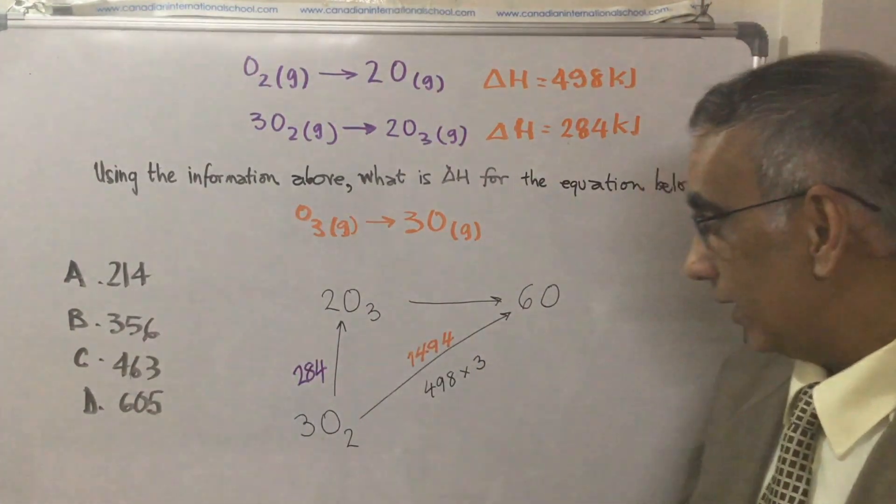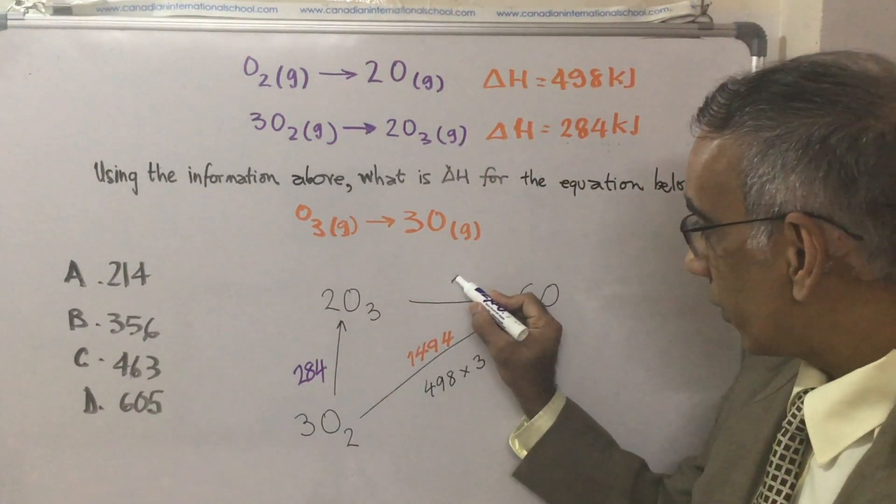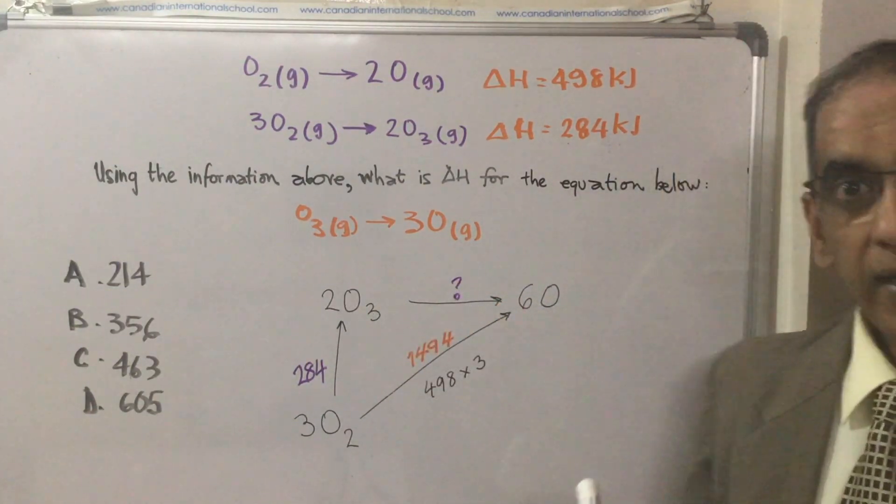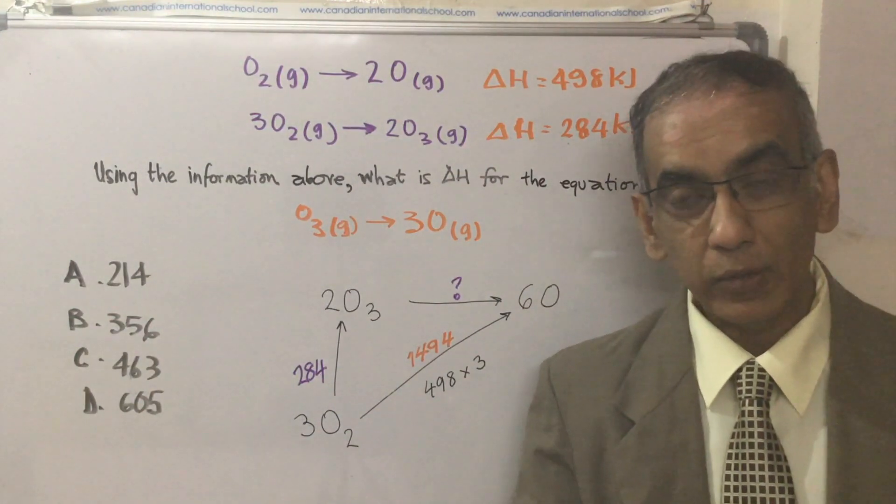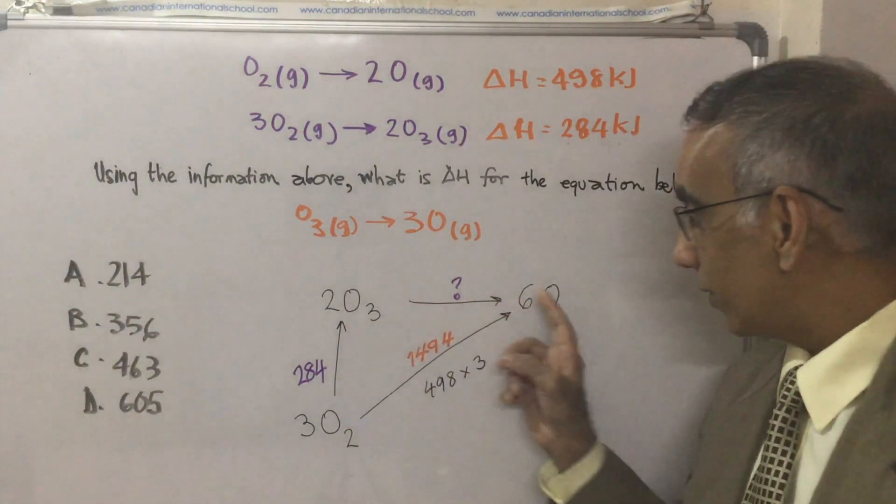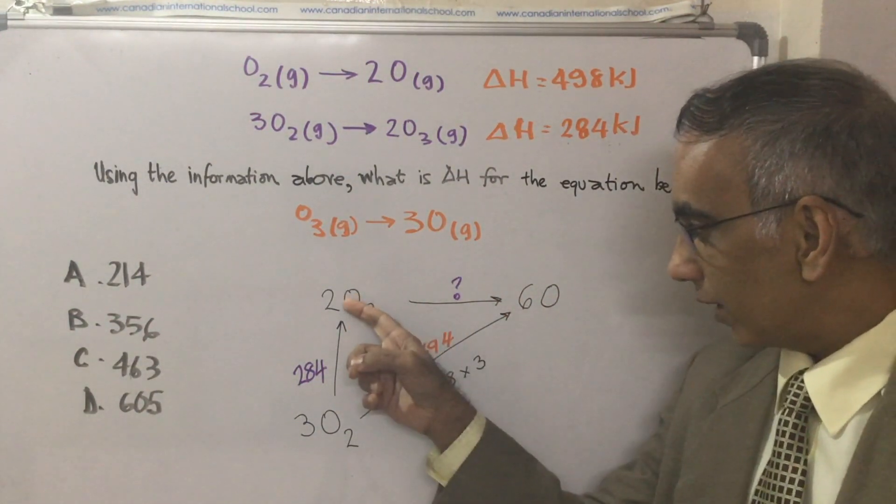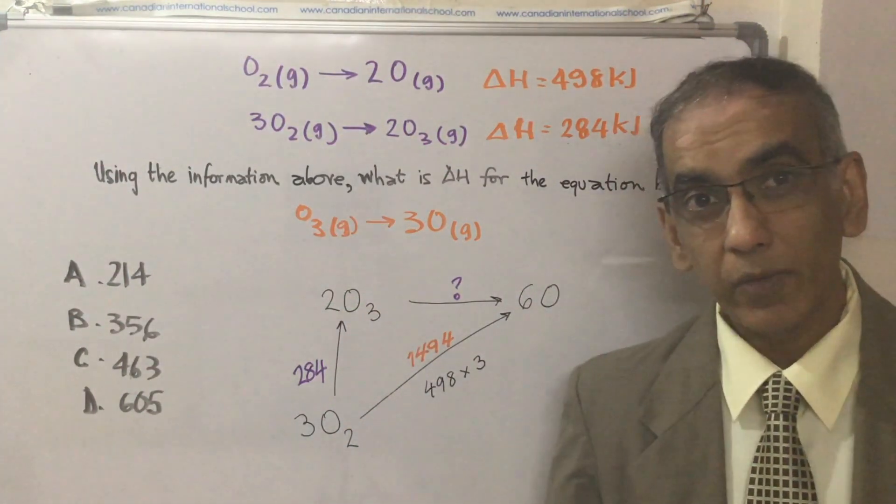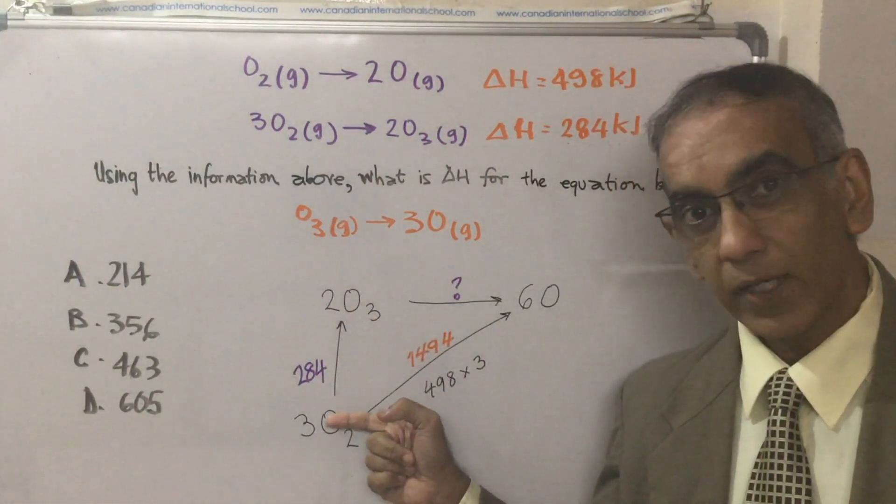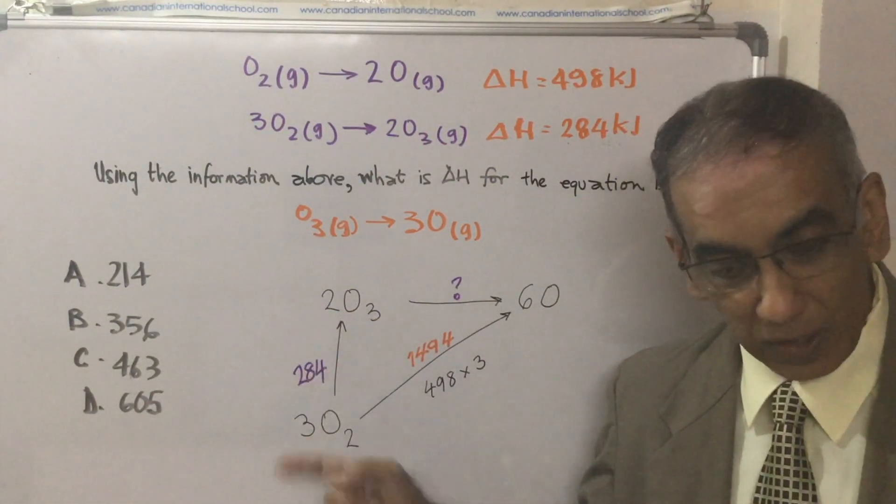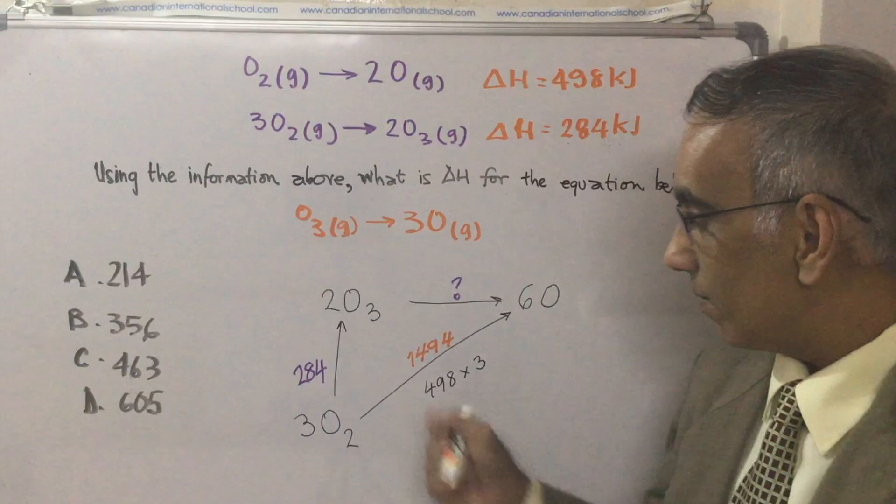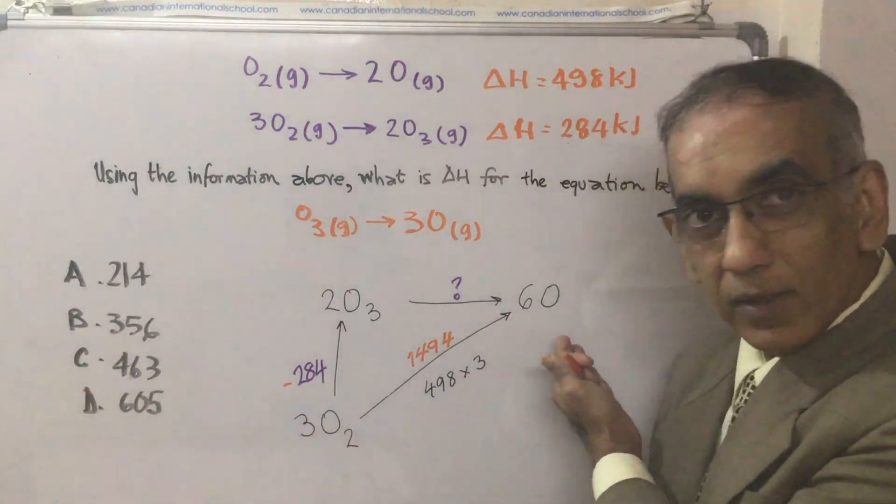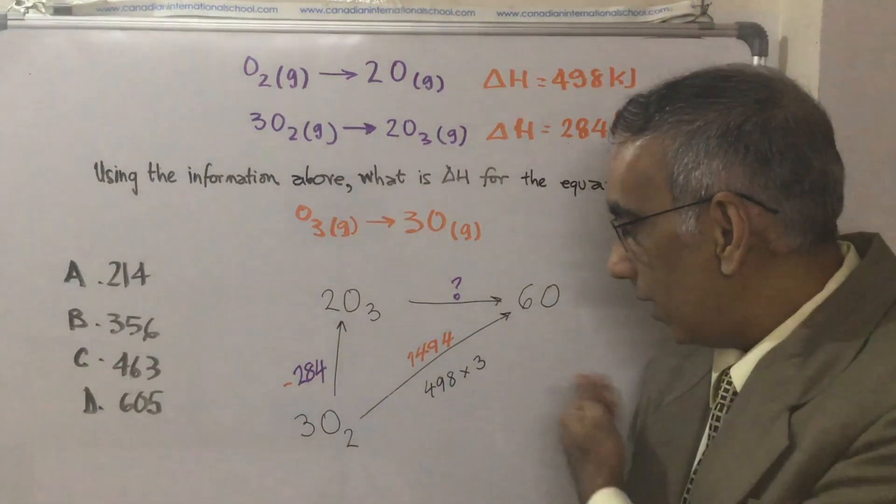Now, according to Hess's law, if you want to solve for this one here, which is the unknown, this energy pathway is going to have the same energy value as if you traveled to these products by going this way and this way. But what we need to bear in mind is if you go in the opposite direction, then the sign must change. So this sign here becomes a negative.